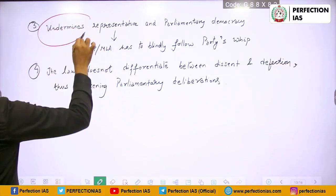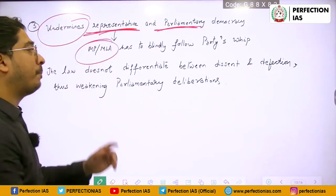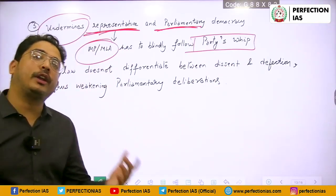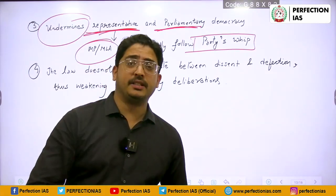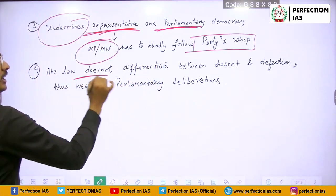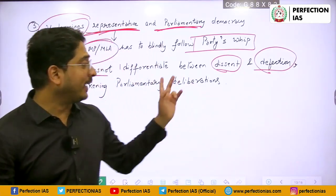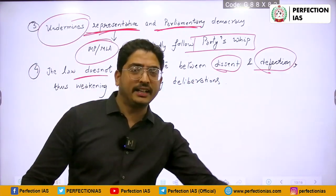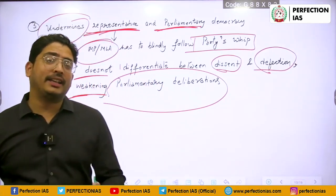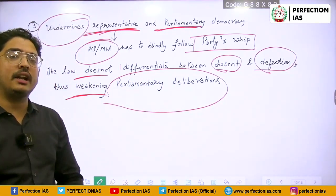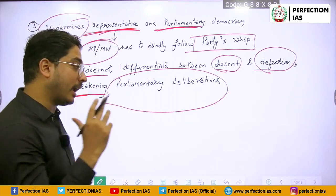Further, the anti-defection law undermines representative and parliamentary democracy because MPs and MLAs have to blindly follow the party whip. Although you can give 15 days' notice, it still hampers their freedom of speech. The law does not differentiate between dissent and defection — both are different. Dissent has a role in democracy. There should be a clear definition of the difference between dissenting and defecting, as otherwise it weakens parliamentary deliberations.